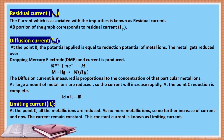What is residual current? The current which is associated with the impurities is known as residual current, denoted as ir. The A-B portion of the polarogram graph corresponds to residual current.